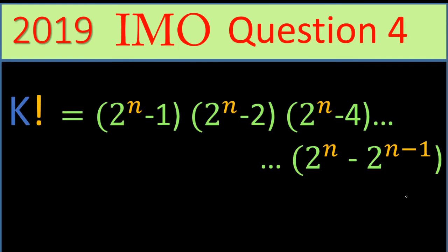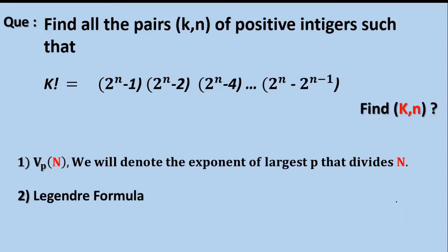Hello everyone and welcome to my channel. Today I'll be solving a problem asked in the International Mathematical Olympiad 2019, question number 4. The question asks us to find all positive integers k and n — this ordered pair — which satisfy the given equation.